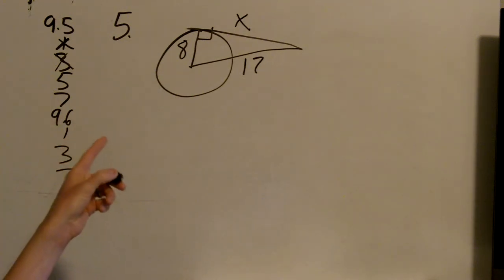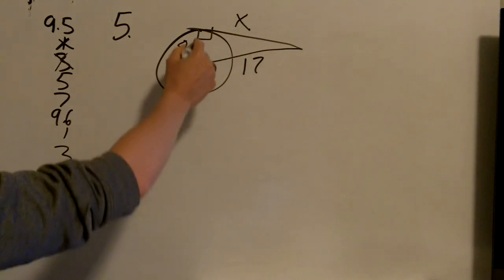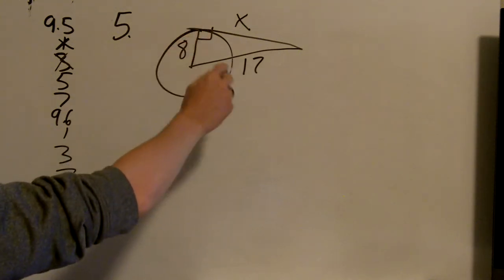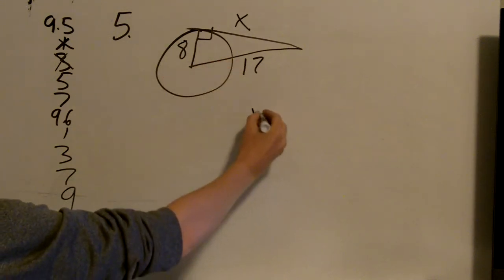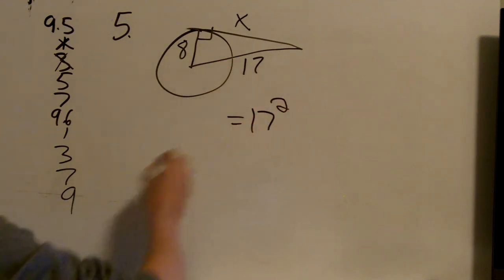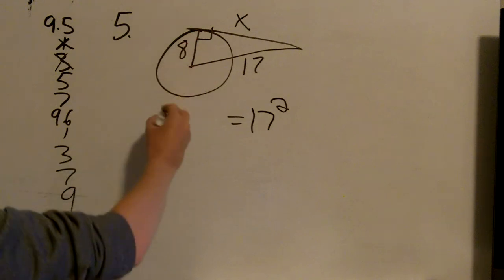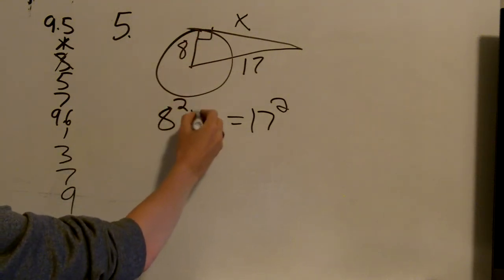So when you see a problem like this, this is always where our right angle is. So that means this is our hypotenuse. So that is the thing that should go by itself. So 17 squared is by itself. And the other two are squared and added together.